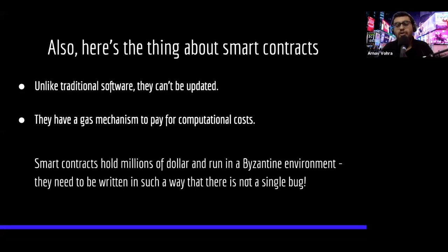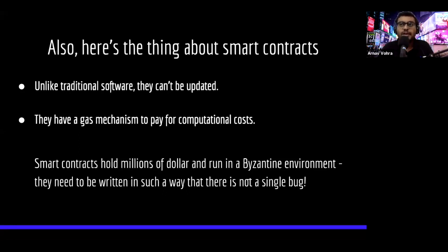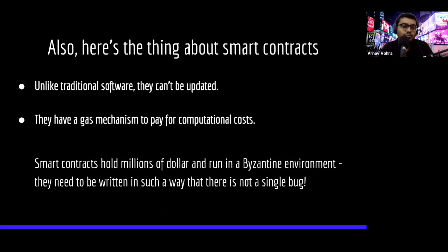You can maybe make a new contract, deploy it to a new address, and say this is now the new contract. You can have some upgrade mechanism, but still you can't update the initial contract. Developers are paying gas for smart contracts, and if they write buggy code and their contract keeps running, there's a chance their funds might get exhausted. Smart contracts hold millions of dollars and they are running in a Byzantine environment — it's like having a bounty on them. If you can hack that contract and gain access to the funds, you basically earn that bounty.